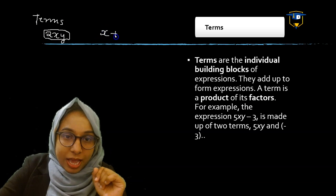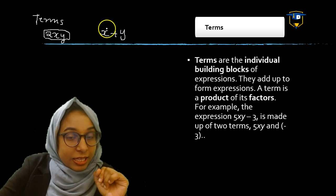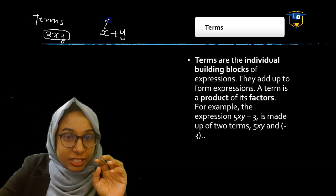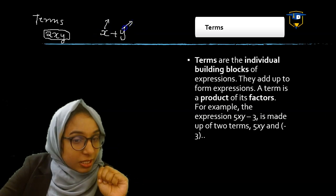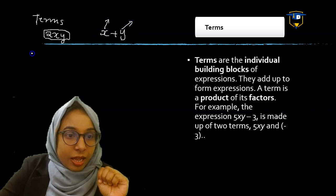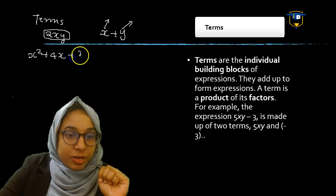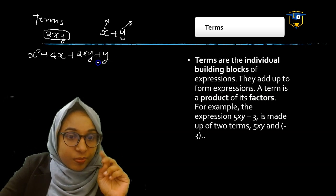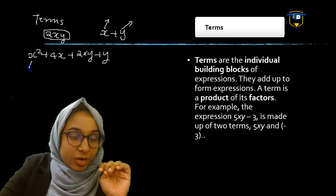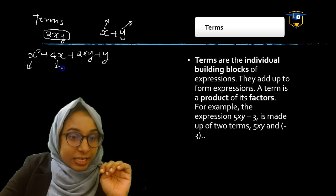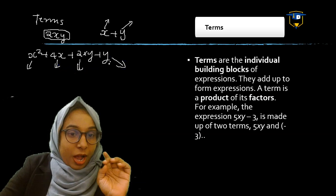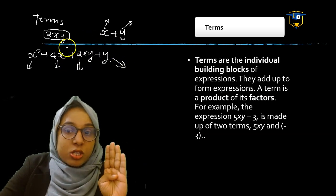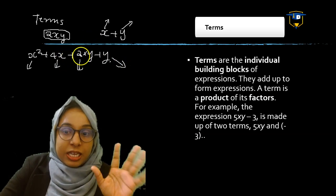Another example: in x plus y, there are two terms — the first term is x and the second term is y. In the expression x squared plus 4x plus 2xy plus y, there are four terms: x squared, 4x, 2xy, and y. Terms are the building blocks of an expression.